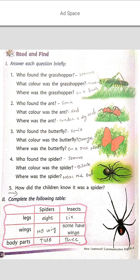By noting down in your notebook and textbook, your handwriting will improve and your spelling will be correct. Question number five: how did the children know it was a spider? You will give this answer as per your knowledge and understanding — your own ideas — and you can also find the answer from the chapter.